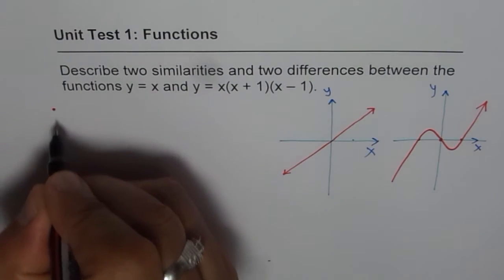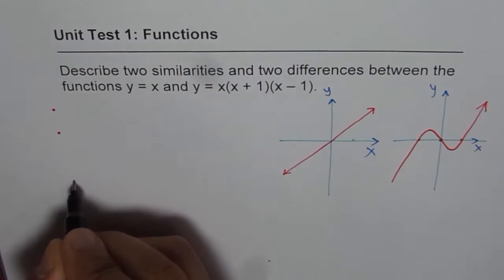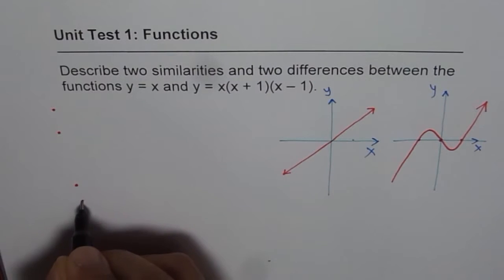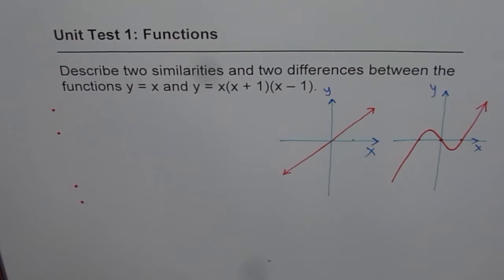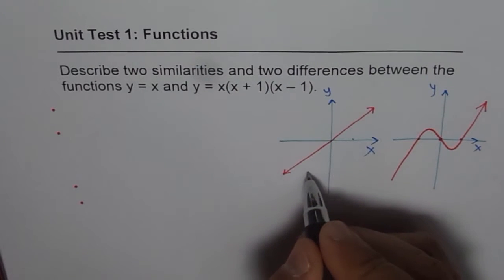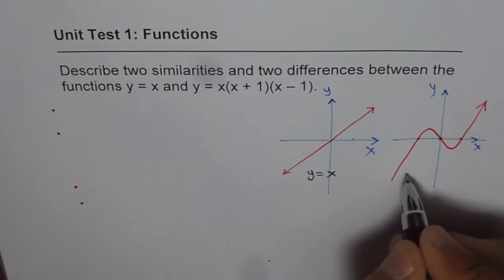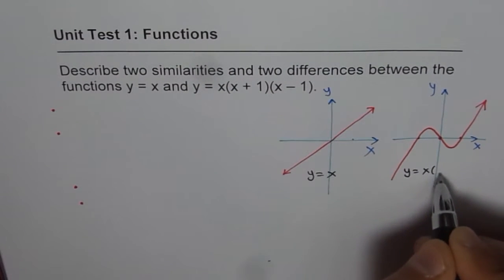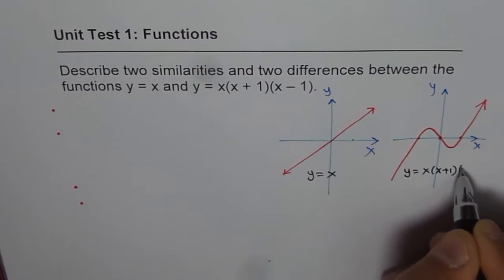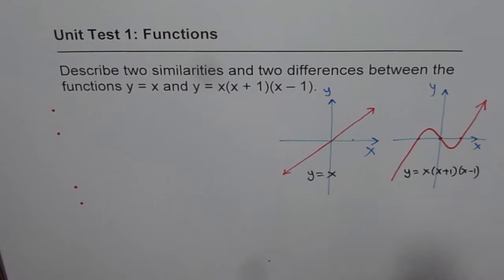Let's write similarities first and then the differences. Now, can you tell me what are the similarities and what are the differences? This is y equals x and this is y equals x times x plus 1 times x minus 1.